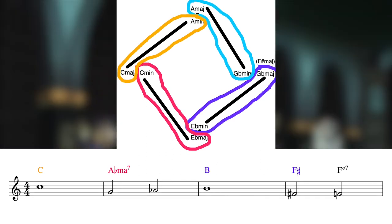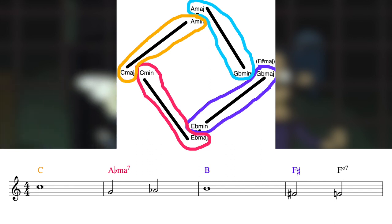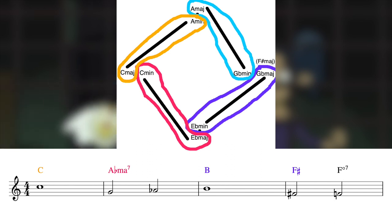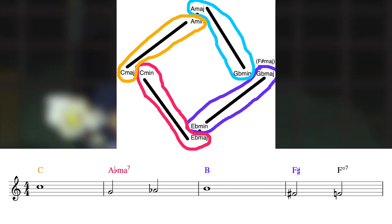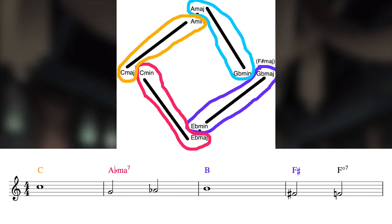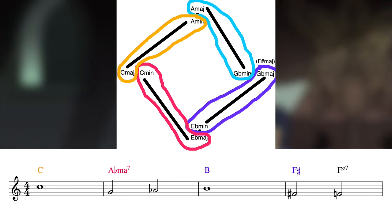Something I find neat is that on the first shift we hit Ab, the 4 of Eb major, and then on the second shift we hit B, which is the 4 of F sharp major. Just an interesting way of using the same chord quality and scale degree function to establish each side of the axis. Then, same as before, we have the F sharp as the 1 of the F sharp major side of the axis, then come back to the F diminished 7.